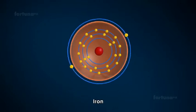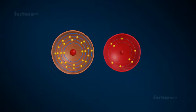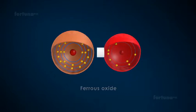Consider iron, which has two electrons in its valence shell. Iron can combine with oxygen atoms to form ferrous oxide.